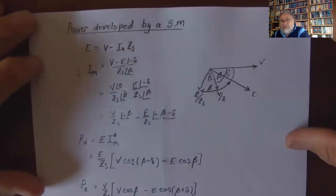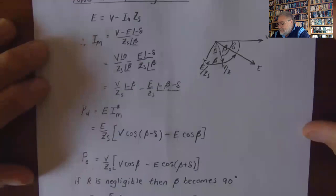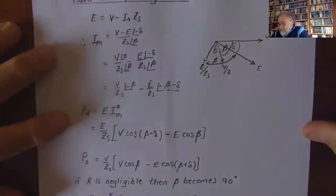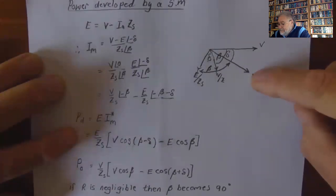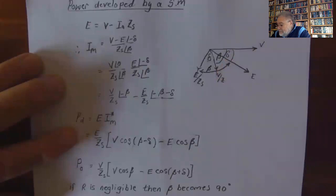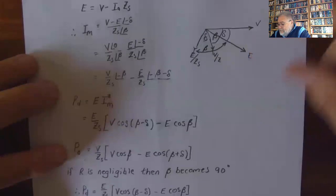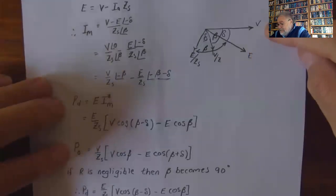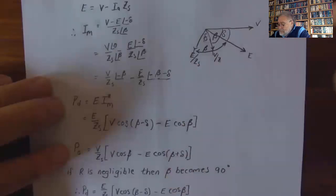If we look at the power developed by the synchronous machine: E equals V minus I_M Z_s, and I_M is then (V minus E angle minus delta) over Z_s at angle beta. The developed power is E times the conjugate of the current. The angle between E and V over Z_s is (beta minus delta), and E over Z_s times cos beta gives the output power. Normally V over Z_s times cos beta and E times cos(beta plus delta) are used.